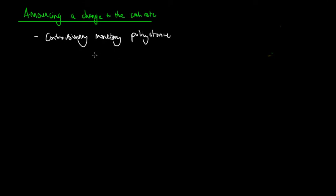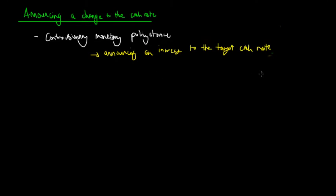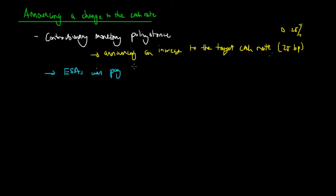A contractionary stance is done by simply announcing an increase to the target cash rate. What they do first is change the rate of interest paid on the exchange settlement accounts. So when they announce a rise in the target cash rate — say by 25 basis points or 0.25% — this means that the RBA will pay an increase of 25 basis points on the exchange settlement accounts of financial institutions. So ESAs will pay 25 basis points higher.